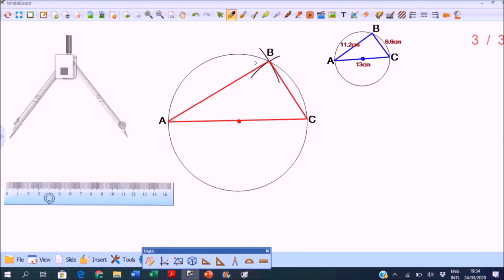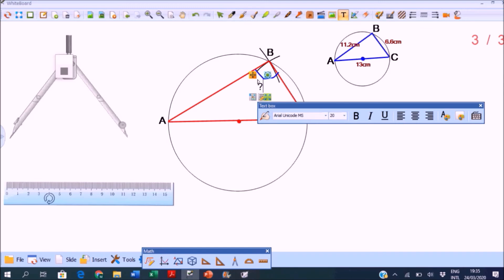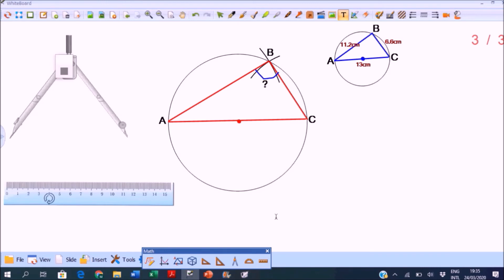The question is: what is the measure of angle B? By looking at the diagram, can you tell? Make a guess. Let's use our protractor to measure.